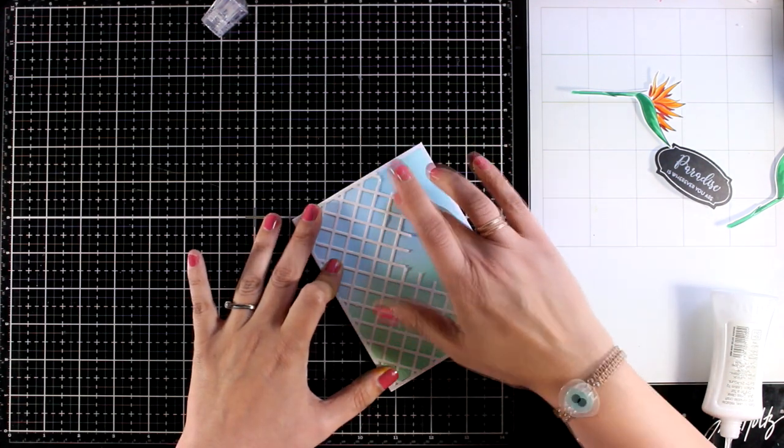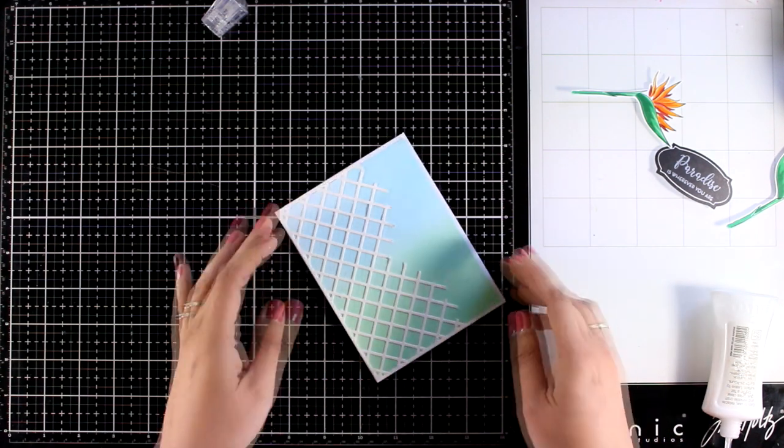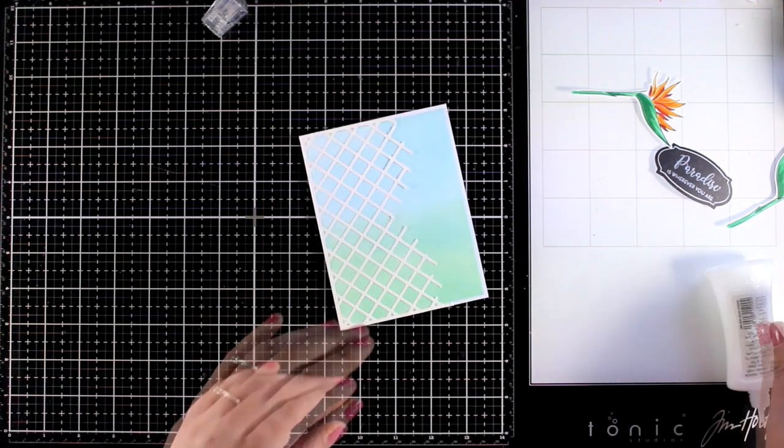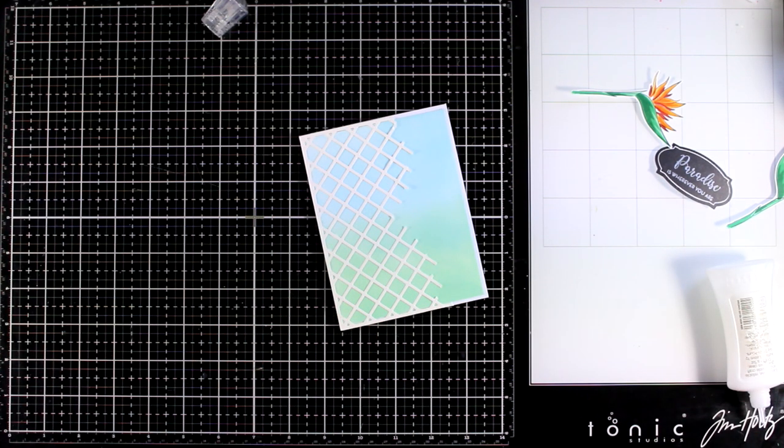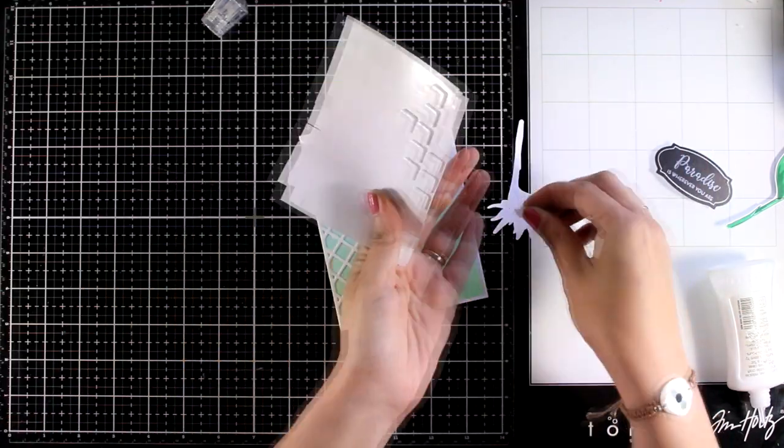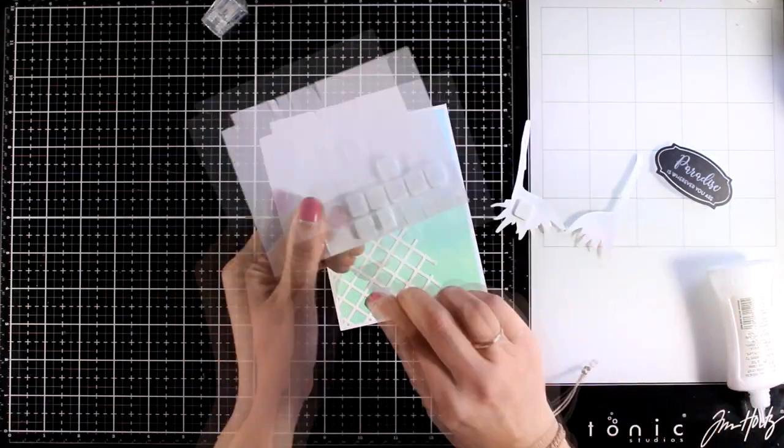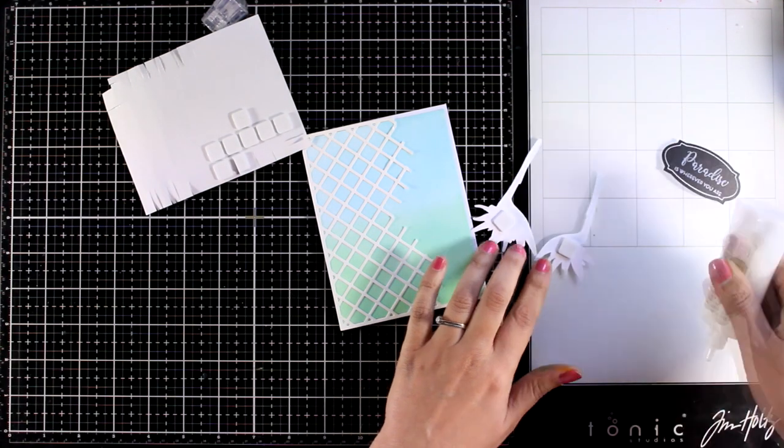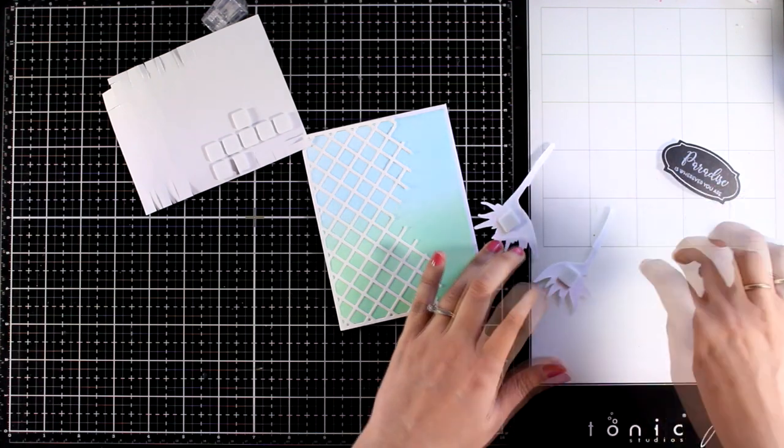Always remember that there are more than one ways to use a die so this was supposed to be a cover die but you don't have to cover up completely the whole background. I wanted to add some dimension on my card so at the back of the flowers I'm going to use some foam squares but at the bottom I'm going to use glue so that they are going to stay nice on top of my card base.